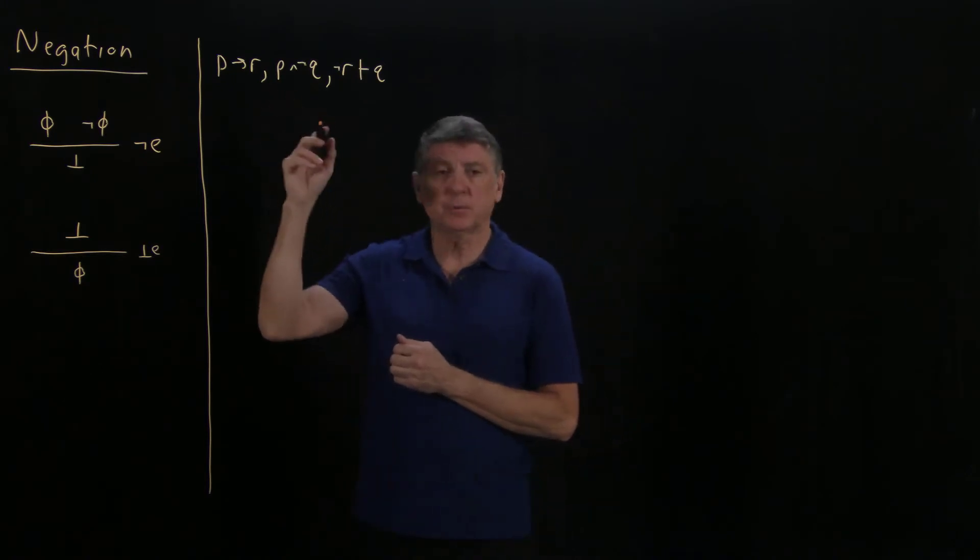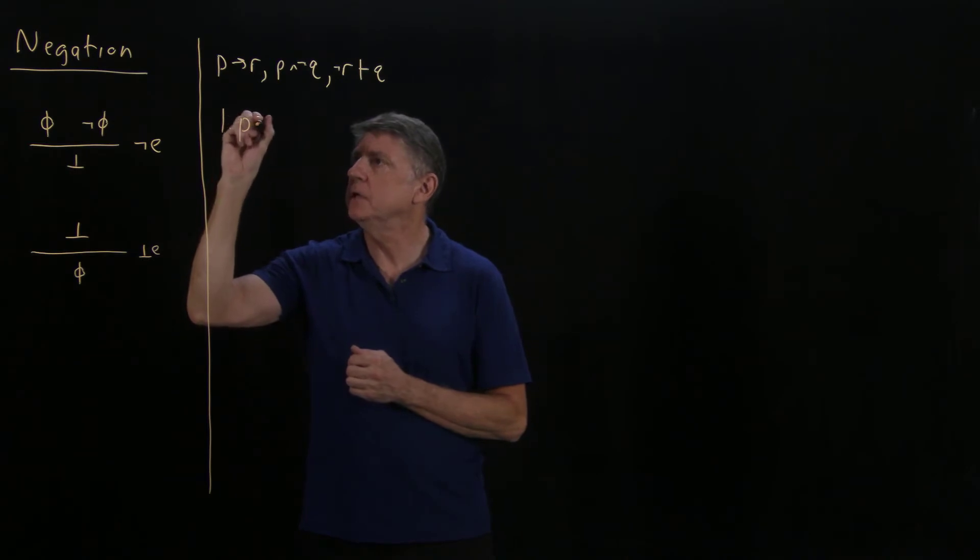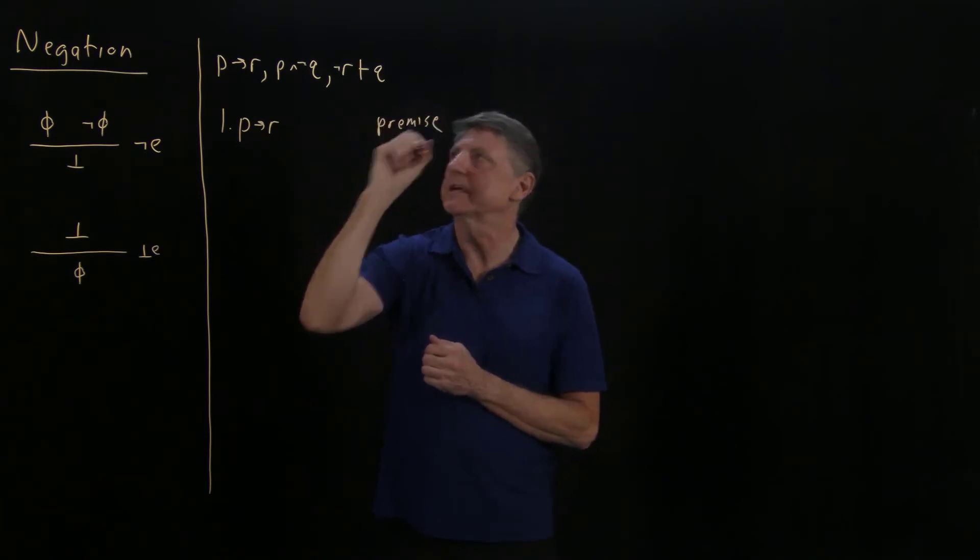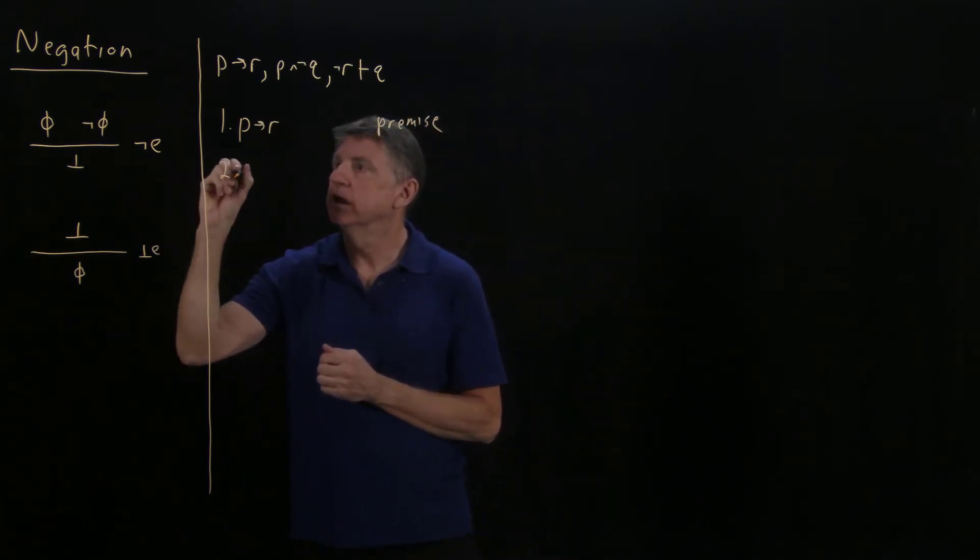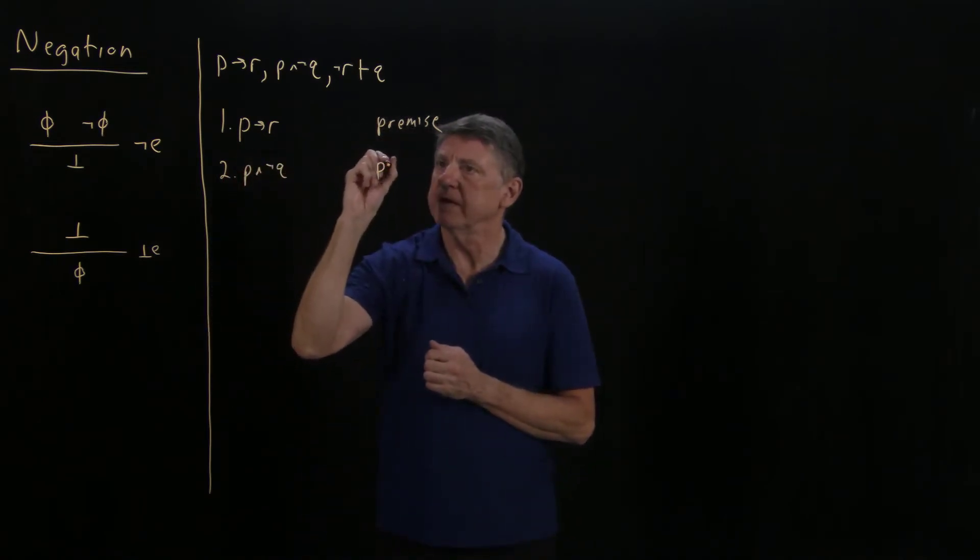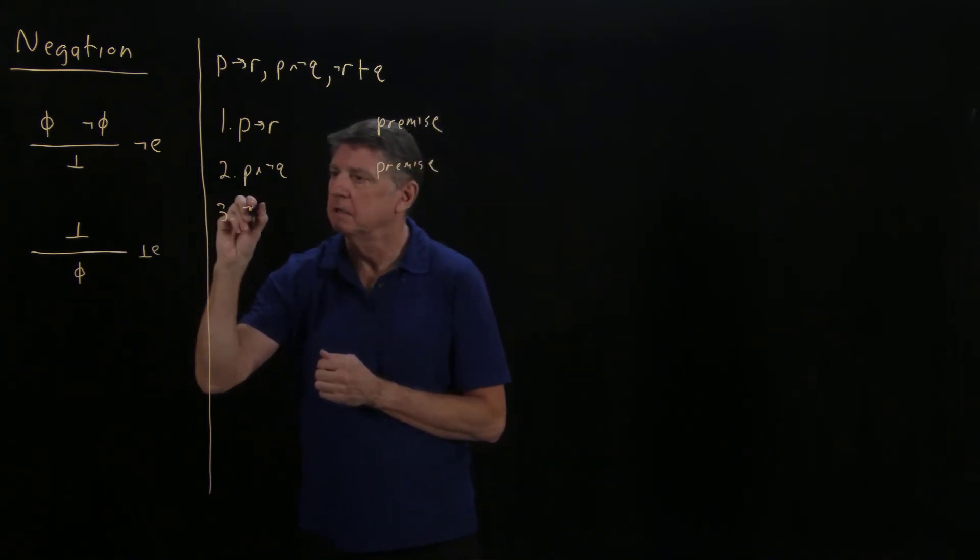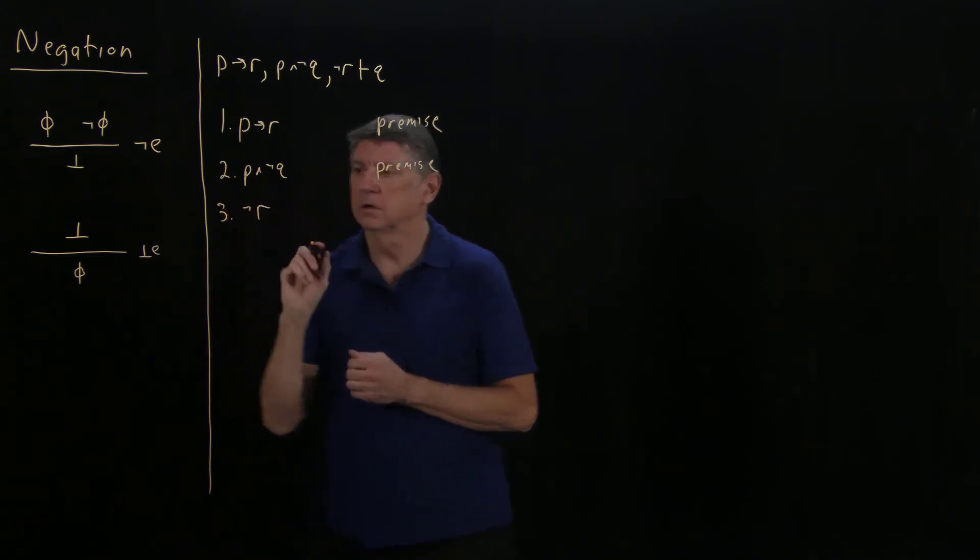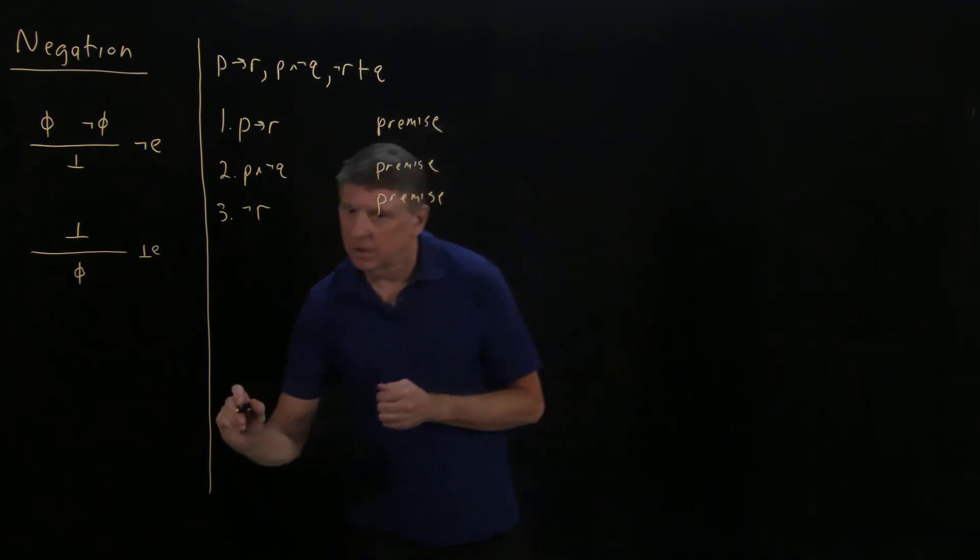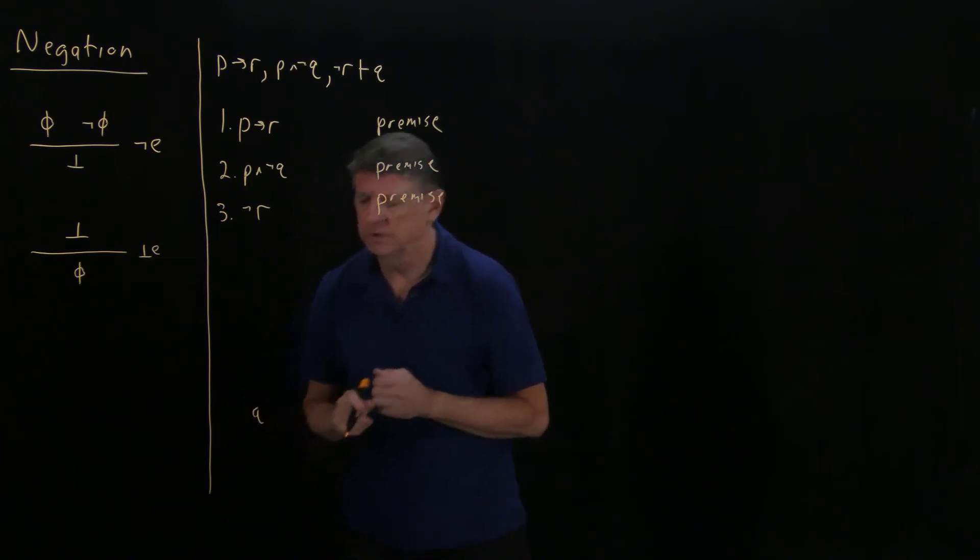We'll begin as we always do. We'll write down the premises, and we'll write down the conclusion. Our first premise is that P implies R. Our second premise is that P and not Q are true, so that's a premise. And our third premise is that R is false. And from this, our desire is to prove that Q is true.